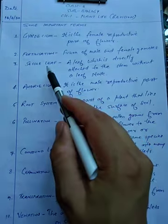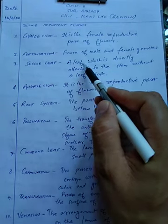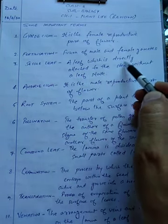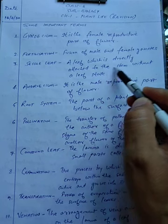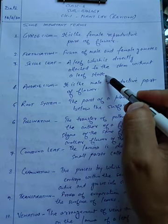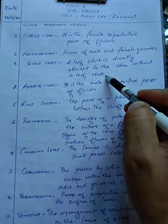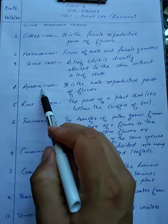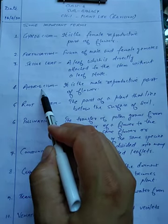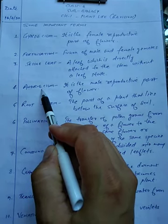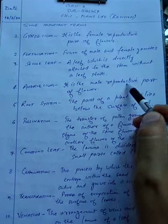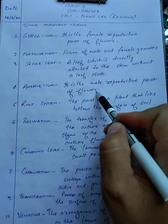Third is sessile leaf. It is a type of leaf which is directly attached to the stem without a leaf stalk. The fourth important term is androecium, which is the male reproductive part of the flower.